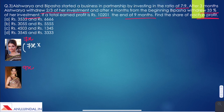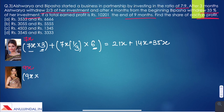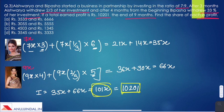After three months Aishwarya withdrew two-thirds, so for three months: 7x × 3, plus only one-third remains for the remaining six months — combined giving 35x. For Bipasha, for the initial four months she kept her whole investment: 9x × 4, plus for the remaining five months she withdrew one-third, so two-thirds remains for five months giving 66x. Total investment is 35x + 66x = 101x. Setting this against the total profit of 10,201 rupees, x comes out to be 101.